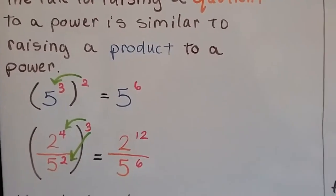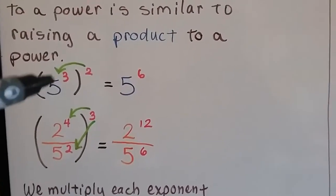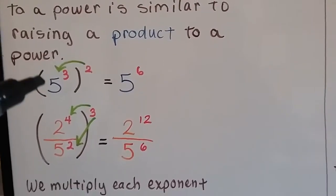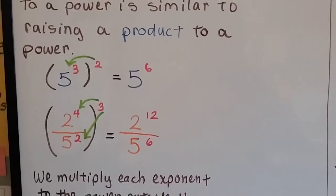We learned to raise a product to a power, we just multiply what's inside as the base to the exponent. So 5 to the third power raised to the second power would be 5 to the 3 times 2, or 5 to the sixth power.